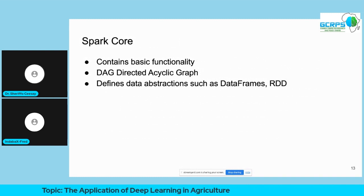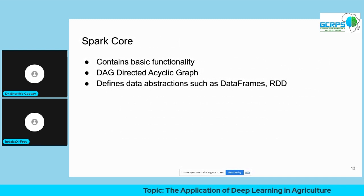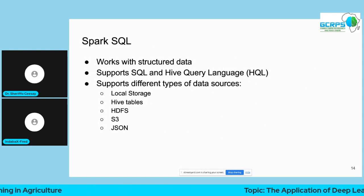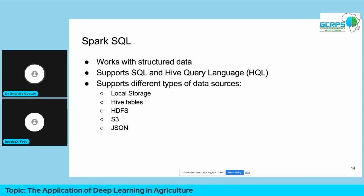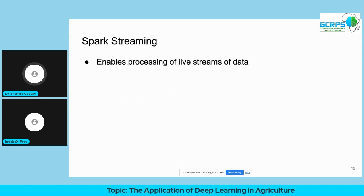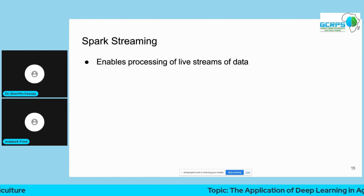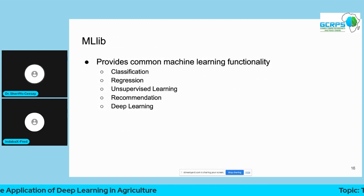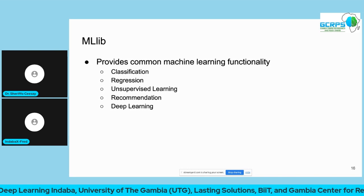Spark also has SQL which you can use to work with structured data, so if you're more comfortable with SQL you can use that to interact with Spark. Streaming enables processing of a live stream of data — you intercept it as it arrives, do some transformations, then display it or store it. There are also machine learning libraries for classification, regression, unsupervised learning, recommendation, and deep learning.